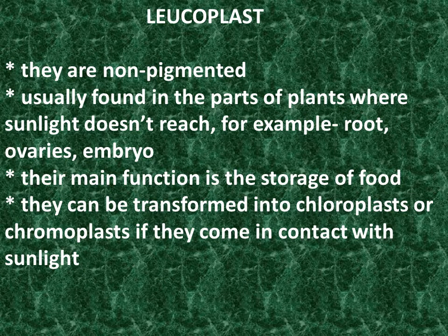Leucoplast: They are non-pigmented, usually found in the parts of plants where sunlight doesn't reach — for example, roots, ovaries, and embryo. Their main function is the storage of food. They can be transformed into chloroplasts or chromoplasts if they come in contact with sunlight.